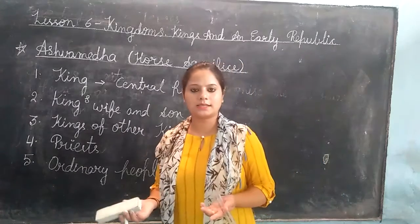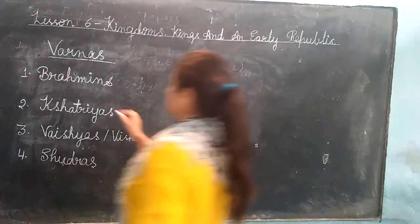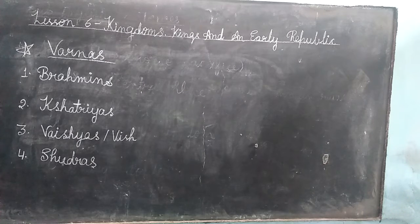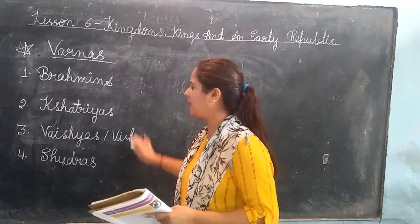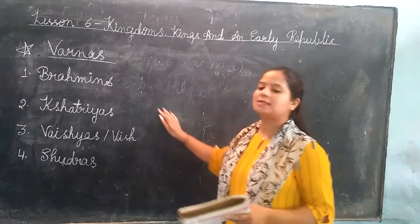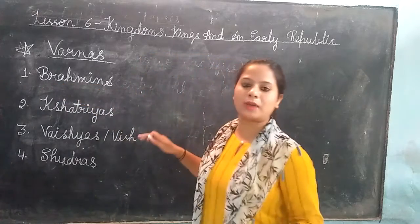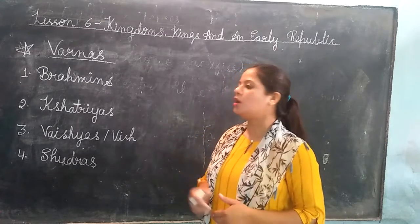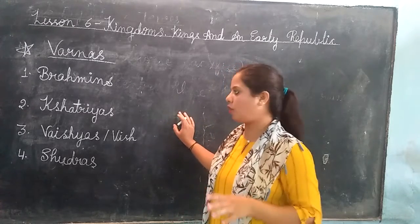Now our second topic is Varnas. People were classified by the priests into four groups, and each group was called a Varna. The first Varna is the Brahmins, whose main function is to teach the Vedas, learn, and perform rituals.